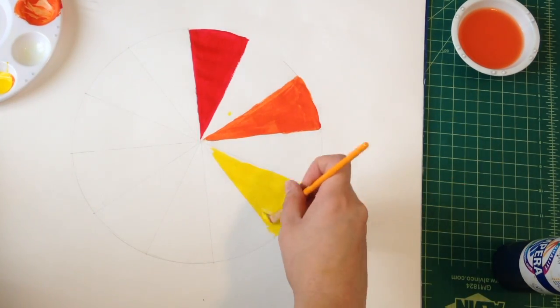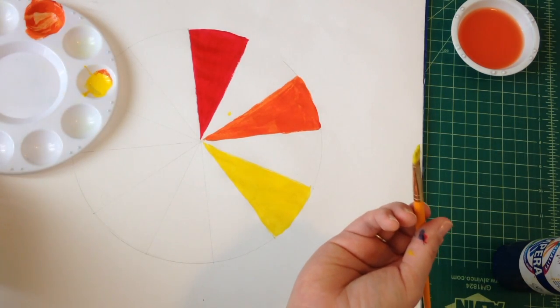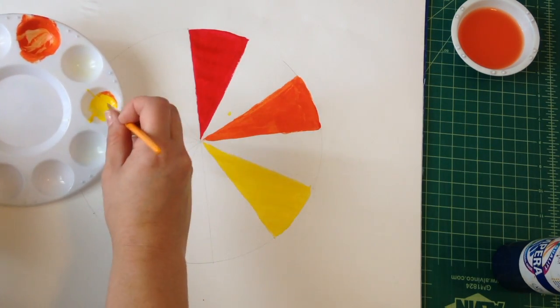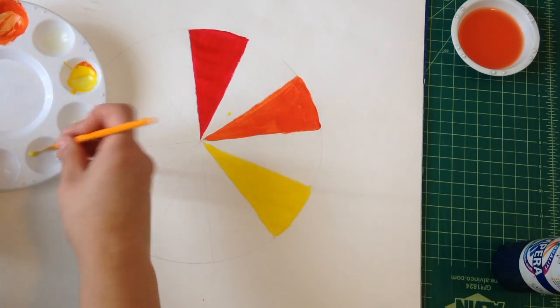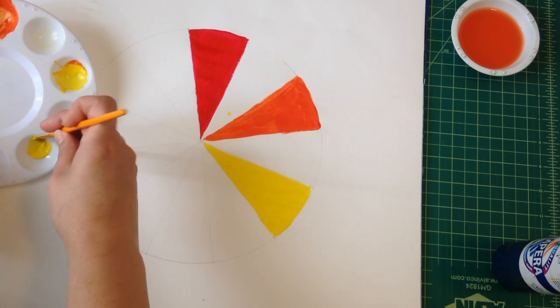Now moving on to yellow. Since I have yellow on my paintbrush already what I'm gonna do is take the yellow and put a lot of yellow in this palette and then I'm just gonna take a tiny bit of blue because we want to do dark into light.